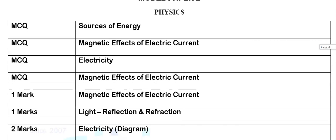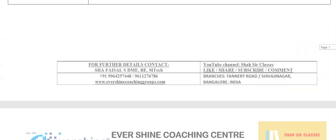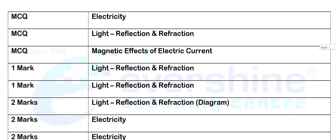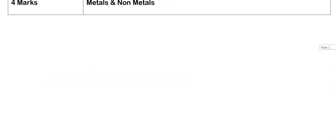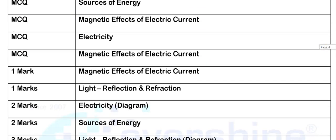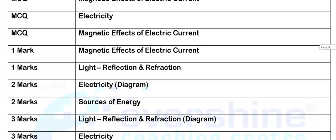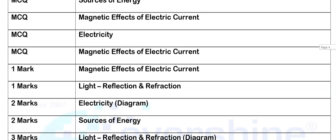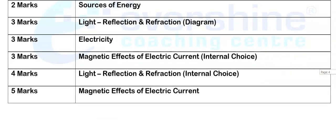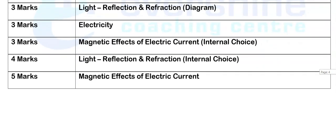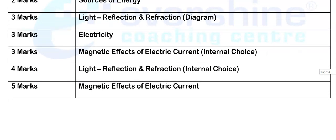Now we can see model paper number 2, physics. MCQs are from sources of energy, magnetic effect, and electricity. In model paper 2 there are 4 MCQs, whereas in model paper 1 there were 3 MCQs — so there is a slight modification. This means we can assure a minimum of 3 MCQs from physics. For 1-mark there are 2 questions in model paper 2 as well. So just compare both model papers as reference — from which chapter and for how many marks questions are asked. You can see the topics on screen; we have done the analysis of which chapter appeared for how many marks.